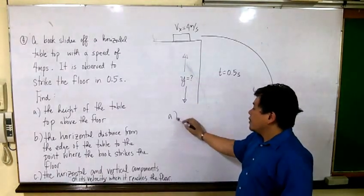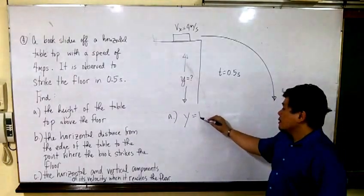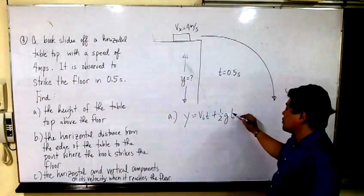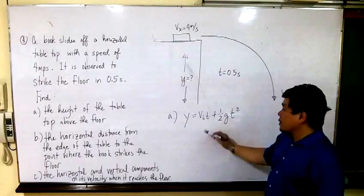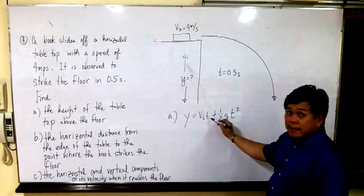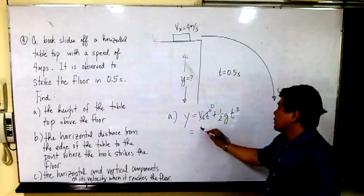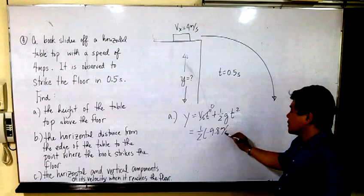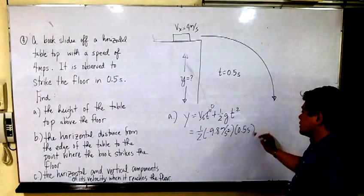To solve for letter A, the equation that we will need is Y equals V sub I T plus 1 half G T squared. V sub I initially is equal to 0, so 0 multiplied by time will give us 0. 1 half and the G is negative 9.8 meters per second squared. The time of flight is given 0.5 seconds.